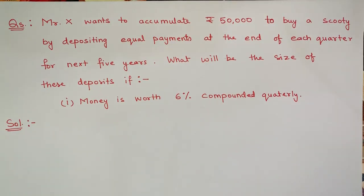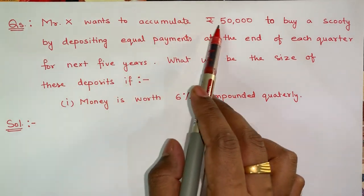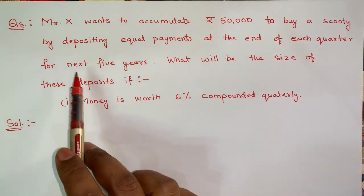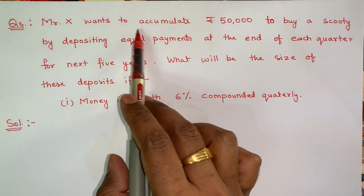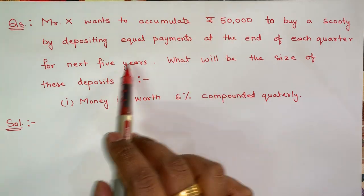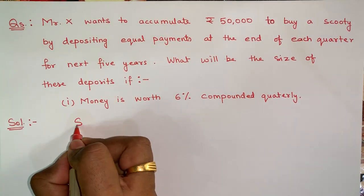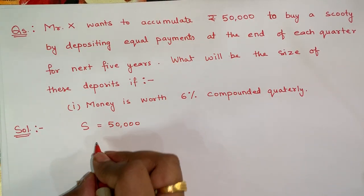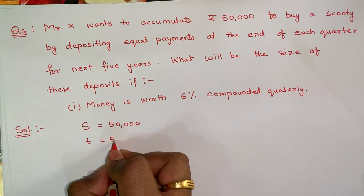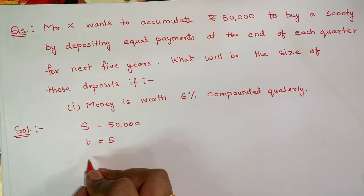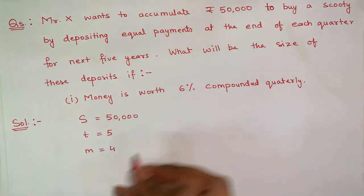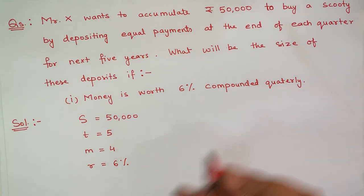Let's understand the concept of ordinary annuity through a question. Mr. X wants to accumulate ₹50,000 to buy a scooter by depositing equal payments at the end of each quarter for the next 5 years. Since he needs to accumulate this after 5 years, the amount is ₹50,000. The time period T = 5 years and compounding is done quarterly, so M = 4.